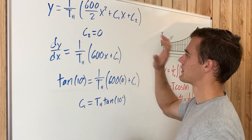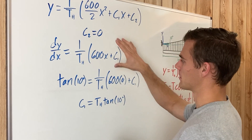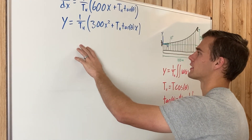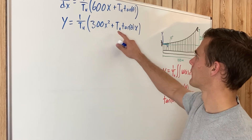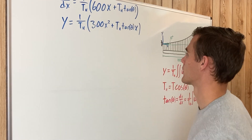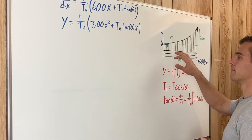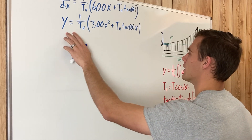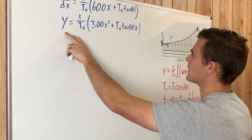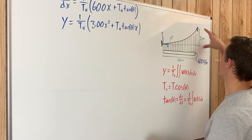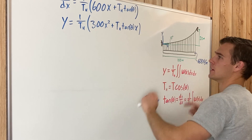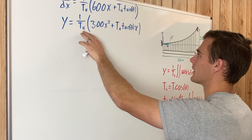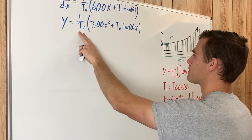With C1 substituted in, we can now solve for Th, the horizontal component of tension. Another known boundary condition is that at x = 100 meters, y = 20 meters. Plugging in y = 20 and x = 100 into the curve equation allows us to solve for Th.